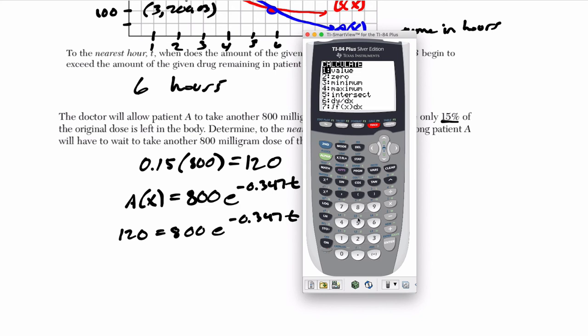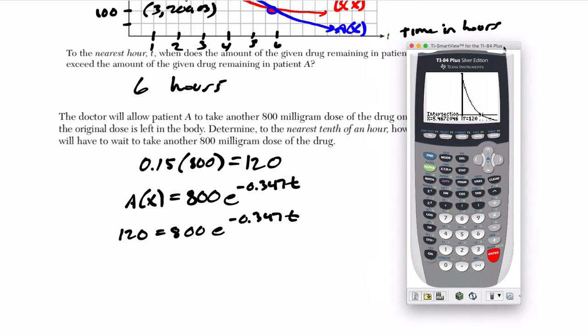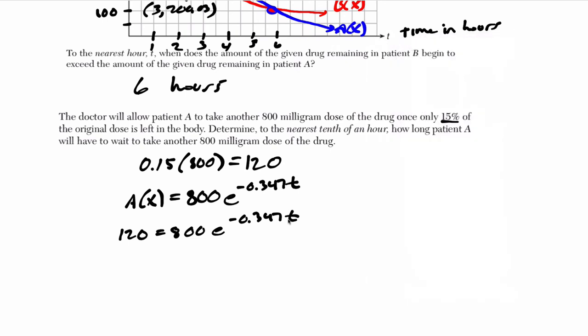So I go to second trace, choice five is intersect, and then same things before first curve, second curve, and then go over and guess. Okay, let's go over. And notice it calls a line a curve. It calls everything a curve in my experience. Okay, so at 5.46, 120, and what do they want to do? They want us to find out to the nearest tenth of an hour, so 5.5. So at T equals 5.5. Now look at this. They don't ask you, so you can say 5.5 hours. I would always do that. I think if you include a unit, you can be very explicit about what you're saying. It's 5.5 hours. They don't need to explain this, so we can stop there.